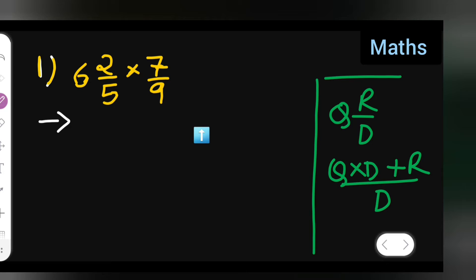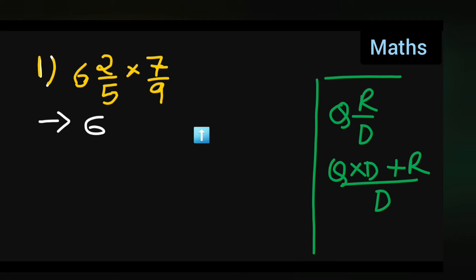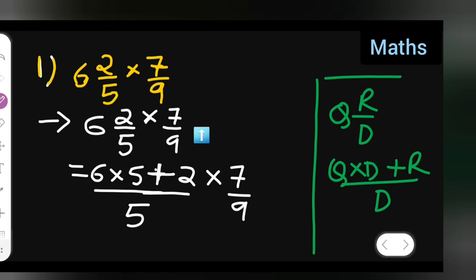Write down 6 and 2 upon 5 multiplied by 7 upon 9. Now this is equal to 6 multiplied by 5 plus 2 upon 5 multiplied by 7 upon 9. What I have done over here is: quotient is 6, multiply this with D which is 5 plus remainder 2.